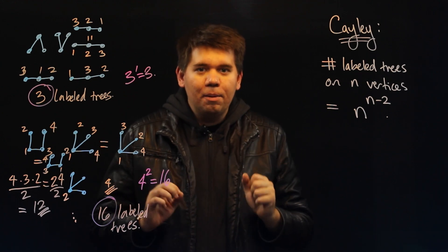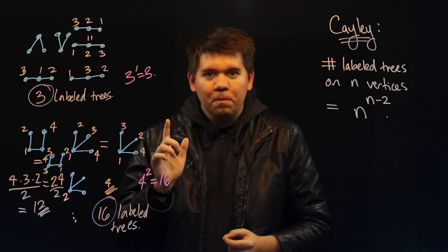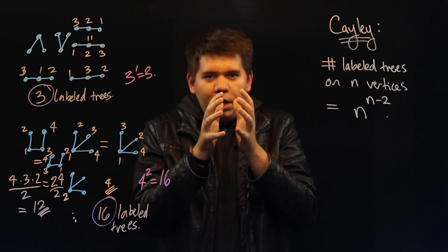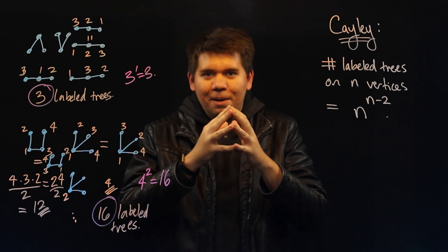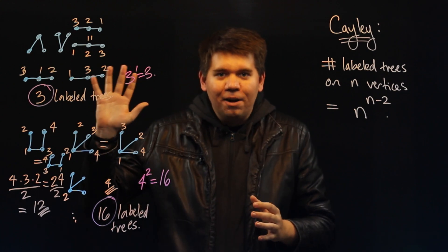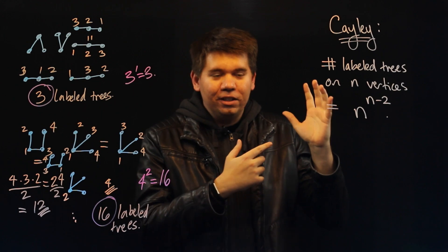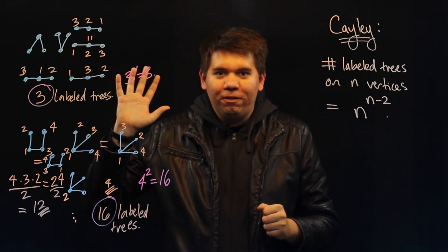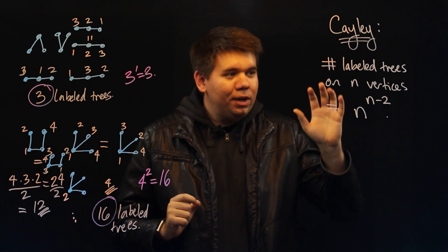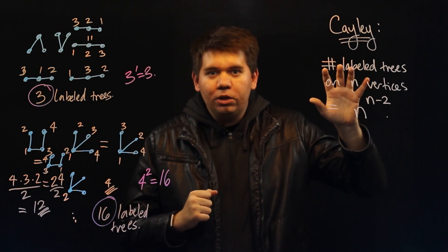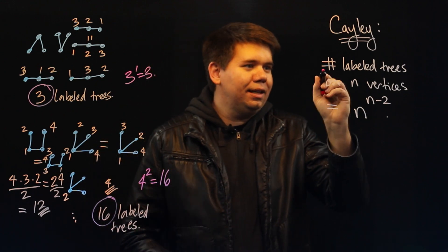An important trick from combinatorics will help us. If you want to count the fingers on your right hand and find difficulty doing that, what you can instead do is put your right hand into a one-to-one correspondence with your left hand — recognizing that each finger aligns with one other finger. We call this a bijection. Then instead of counting fingers on your right hand, you just count fingers on your left hand. This is a powerful technique: whenever we want to count something, we can find a one-to-one correspondence between it and something else and count that instead.